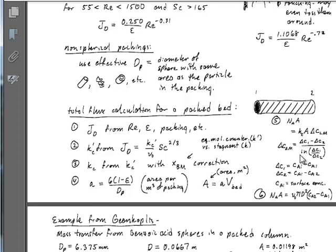The total mass transfer rate equals the mass transfer coefficient times area times the log-mean concentration difference. The log-mean concentration difference is the driving force averaged along the bed. Delta C at location 1 is the concentration at the surface of the packing minus the concentration in the bulk fluid. You do the same at the other end of the bed and plug both into the log-mean expression.